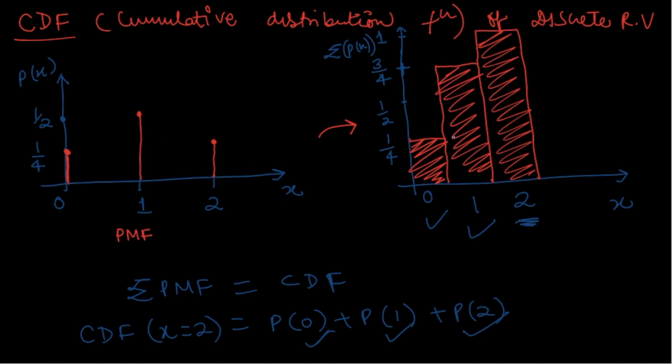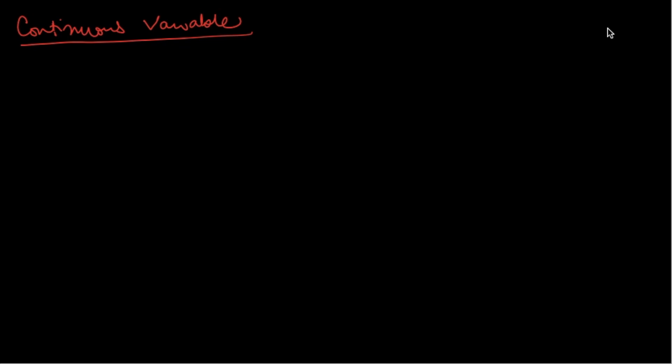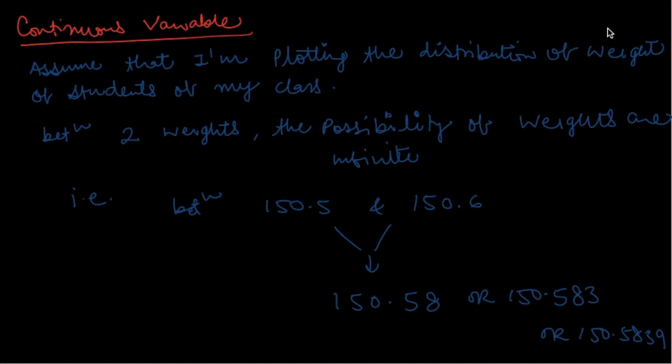Now moving to continuous variables: the output of the experiment is continuous. One example is the height or weight of students in a class. We say weight is a continuous variable because if I plot the distribution of weights, between any two weight values the number of possible weights is infinite.